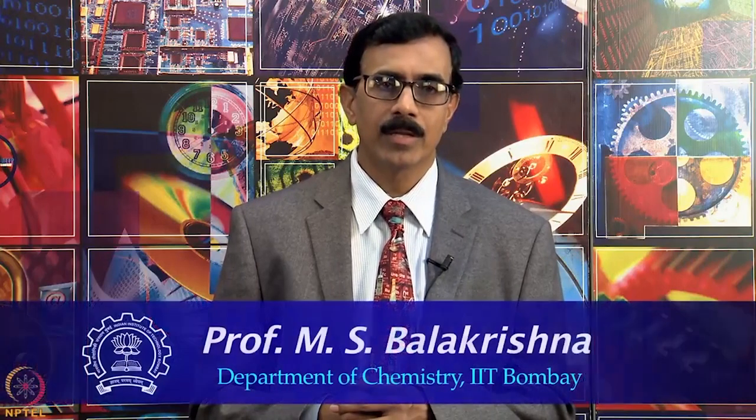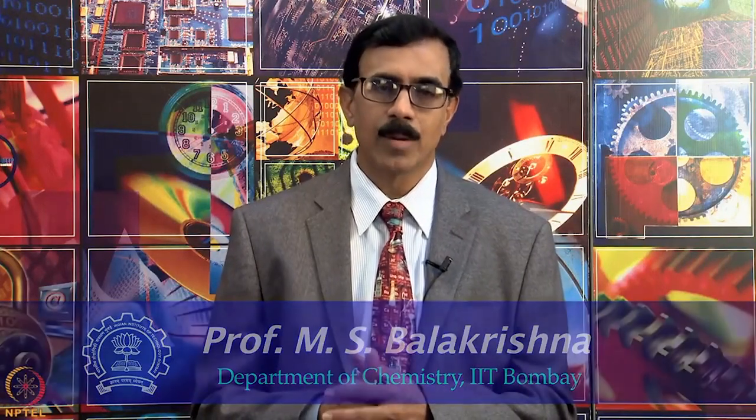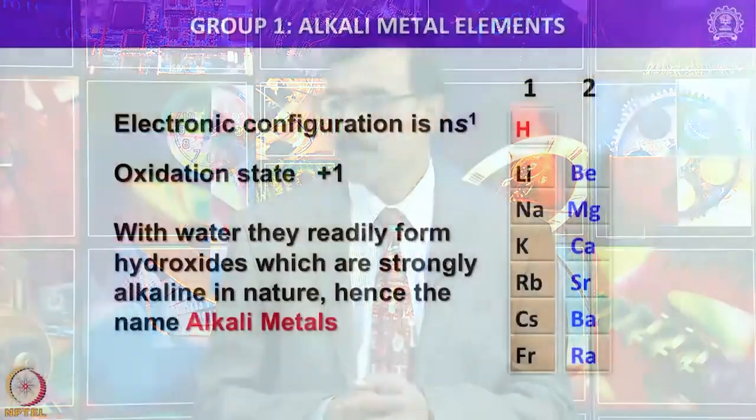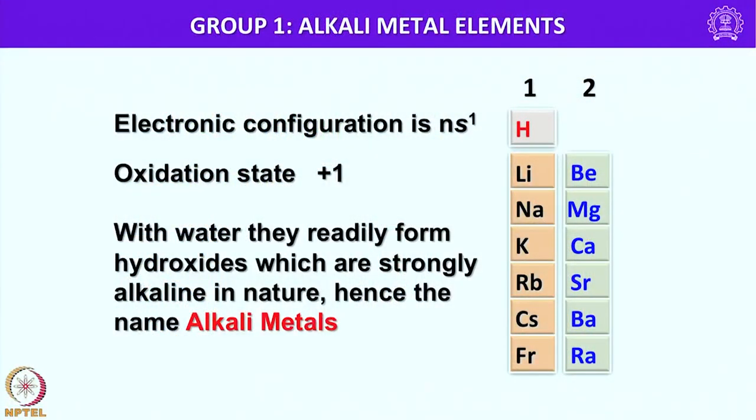Let me begin the discussion on group 1 elements, that is chemistry of group 1 elements. Group 1 elements are essentially called as alkali metals and the electronic configuration is NS1, that is they have one electron in their valence shell and as a result oxidation state of alkali metals is plus 1. Here I have listed all the alkali metals in group 1, including hydrogen, though I am not going to discuss about hydrogen.